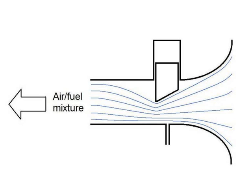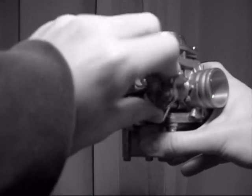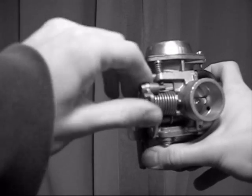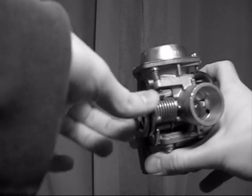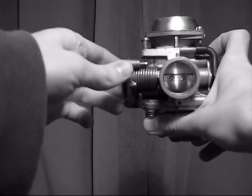The venturi effect is best represented in this diagram, where the inflow of air is represented by the blue lines. At this point, it is clear how the air mixes with the fuel, but how does the driver decide how much air-fuel mixture enters the engine? Practically, when he pushes on the accelerator, all that happens is that a valve called the butterfly valve is opened at the end of the carburetor, letting a greater amount of air-fuel mixture into the engine, creating more power.